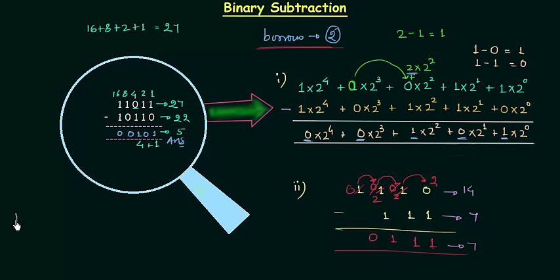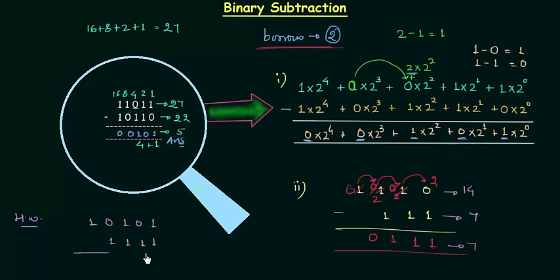Now we will move to the homework problem. The first binary number is 10101 and the second binary number is 1111 and you have to subtract. Once you have your answer, post it in the comment section. This is all for this presentation; see you in the next one.